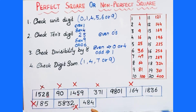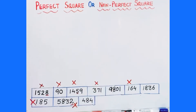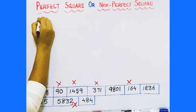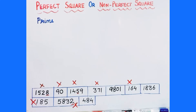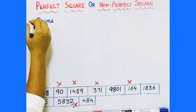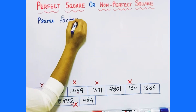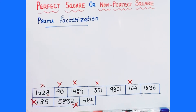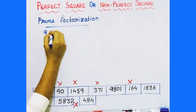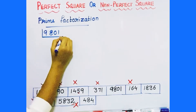Out of these numbers, we have identified which are not perfect squares. The remaining numbers might be perfect squares. But to confirm that a number is a perfect square, the four tests are not enough alone — you need to do prime factorization. Prime factorization confirms whether a number is a perfect square or not.